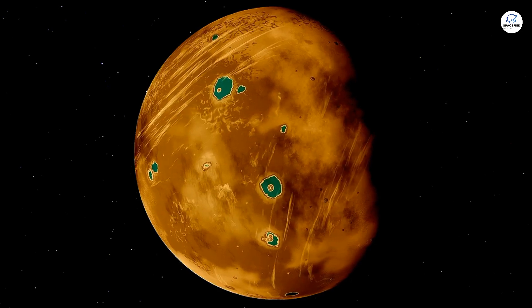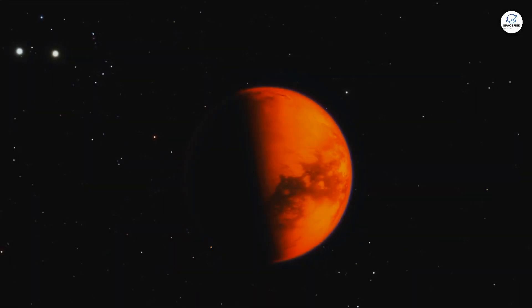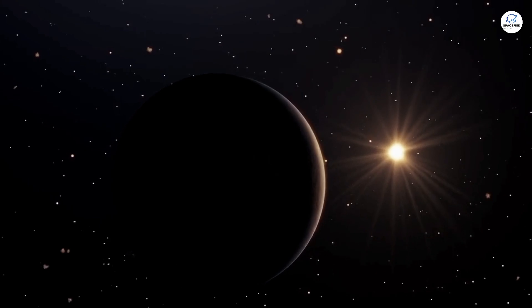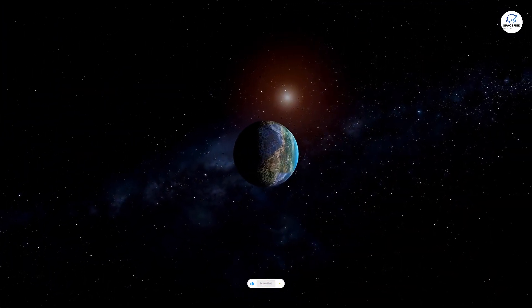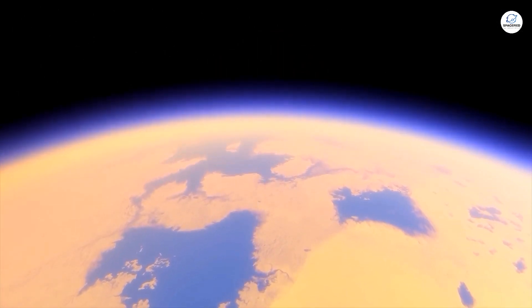So, what does all this mean for us? The discovery of these bizarre, terrifying planets, whether it's the marshmallow-like TOI-3757b, the pitch black TRES-2b, or the iron-raining WASP-76b, reminds us just how strange and unpredictable the universe can be.